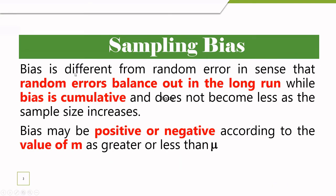Bias is different from random error in the sense that random error balances out in the long run, while bias is cumulative and does not become less as the sample size increases. Other errors like sampling errors and random errors will be minimized as we increase the sample size. But in the case of bias, after increasing the sample size, we cannot minimize bias because it is cumulative.